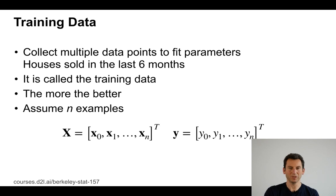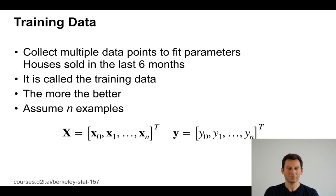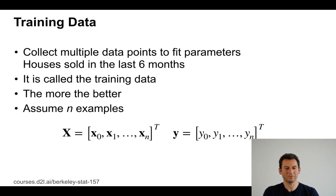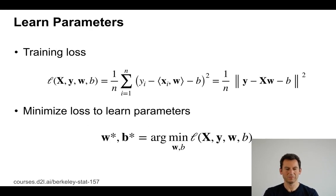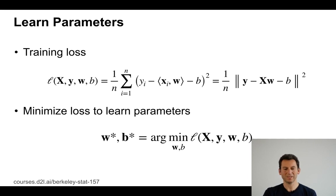Now I have my model and a loss. I know how to get my outputs and my inputs — I need data. I need training data. For instance, I might pick all the houses that sold in the past six months and use that to come up with an estimate of how much houses will cost. I therefore have n examples: x1 up to xn and correspondingly y1 through yn. My loss is going to be the average over i from 1 to n of (yi minus xi dot w plus b) squared, and my goal is to find parameters w and b such that that loss is minimized.